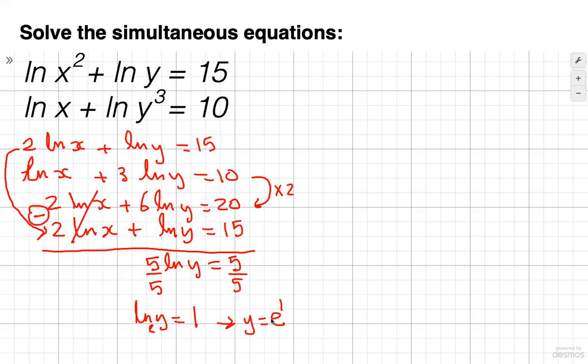Okay, so we got y equals e to the 1. Now what I'm going to do is take this e to the 1 and substitute it in this equation right here. We're going to substitute it in equation 1. So we're going to rewrite this as 2 ln x plus ln of e to the 1 equals 15.